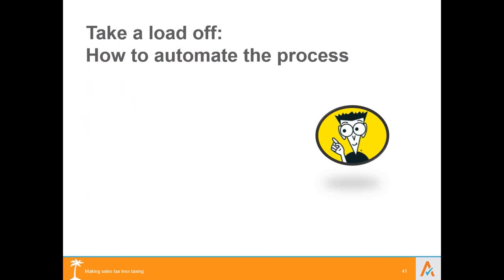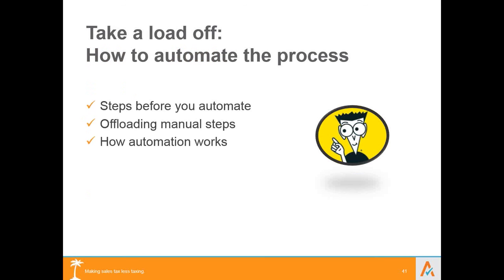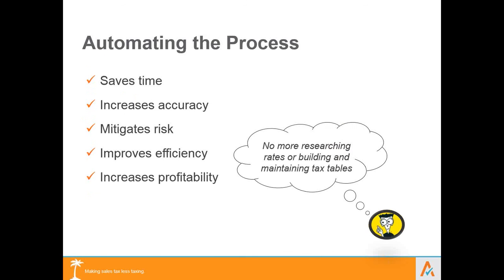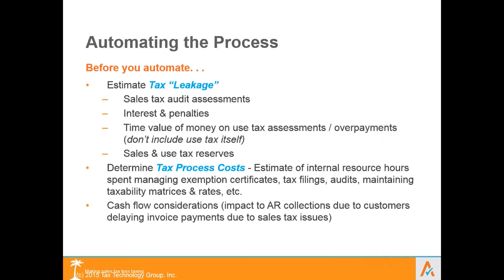The way to tie a bow around all of this is automation. Just like companies outsourced payroll to ADP and Paychex, you can do the same with sales and use tax. Automating saves you time, saves you money, increases accuracy, mitigates risk, and makes you more compliant. A lot of companies are scared to have an auditor walk in the door, but if you're outsourcing to the right solution, you can be confident that an audit will be handled well.